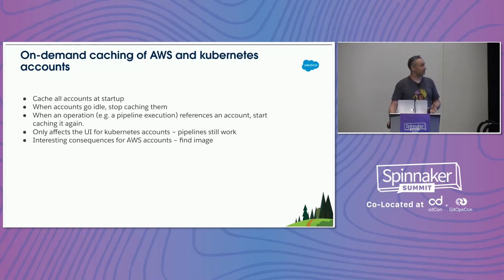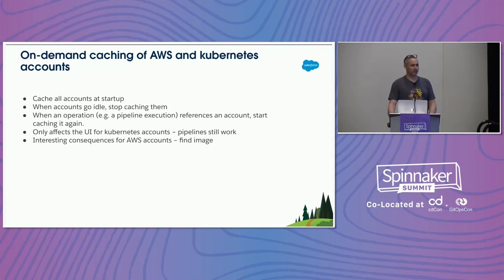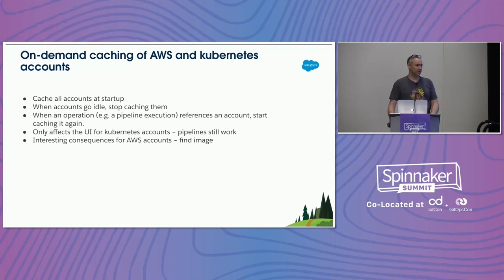That by itself isn't earth-shattering — keeping track of operations to restart the clock is straightforward, and for Kubernetes accounts that was basically it. Kubernetes pipeline stages used to depend on the cache to operate, but around version 1.23, 'live manifest mode' became the default, meaning Kubernetes pipeline stages no longer depend on cached information. So if an idle account isn't being cached, the pipeline still works — the only consequence is you don't see that account's information in the infrastructure tab.